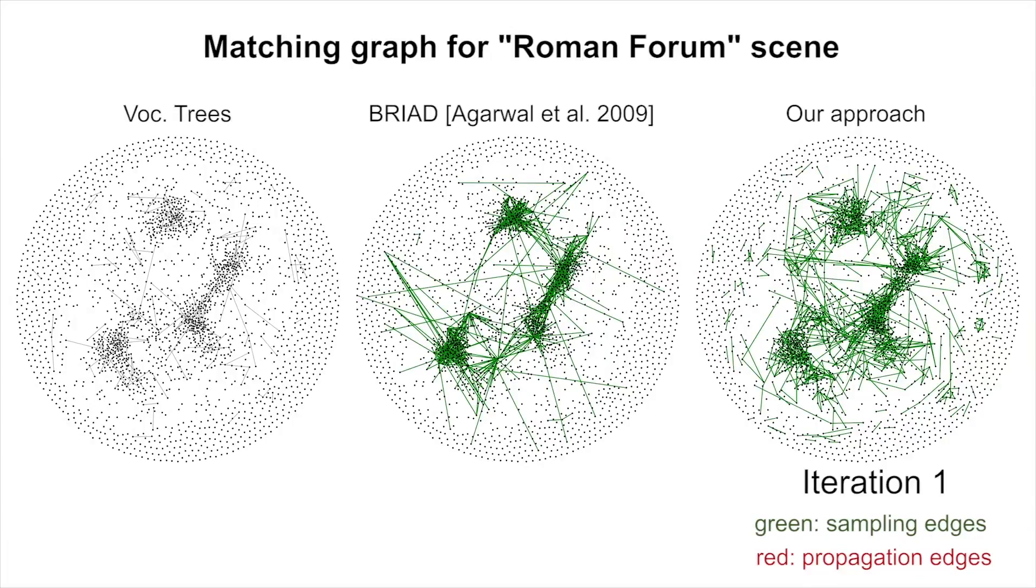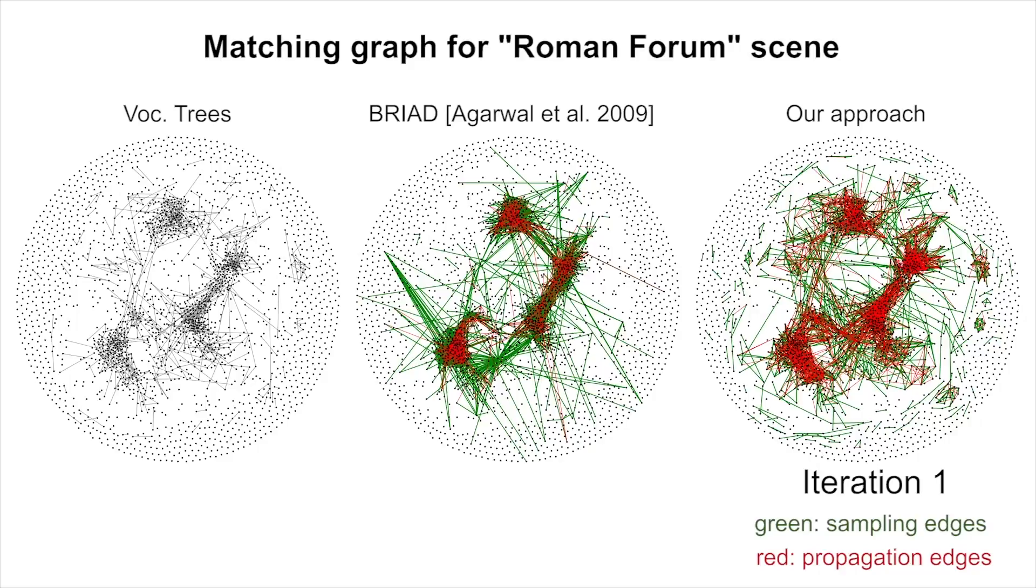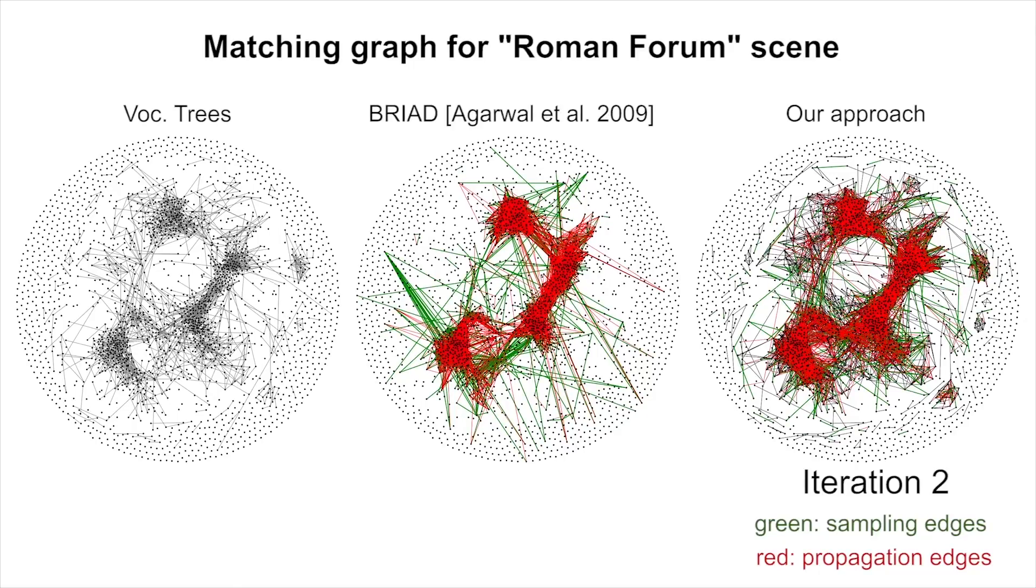The proposed sample and propagate algorithm of GraphMatch is extremely efficient at finding edges in the matching graph, even when compared to state-of-the-art algorithms such as vocabulary trees or the query expansion approach of the Building Rome in a Day method presented by Agarwal et al. The vocabulary tree method only exploits appearance-based similarity for computing matches, so it produces a graph that is visibly less dense.